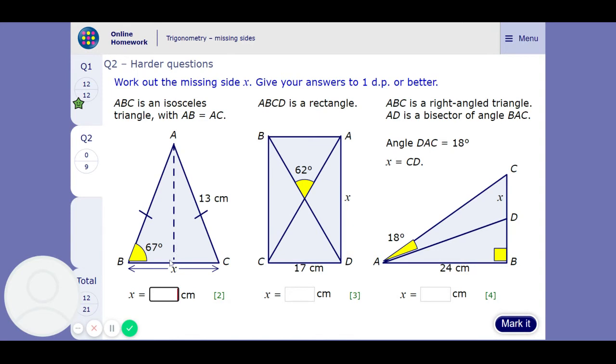So ABC is an isosceles triangle with AB equaling AC. So this length equals this length. Obviously this bottom angle's going to be 67 degrees as well. So bearing that in mind, we can get a right angle triangle from half of this. We can work out this half-angle up here. So if we do that, this top part is going to be 23 degrees up here.